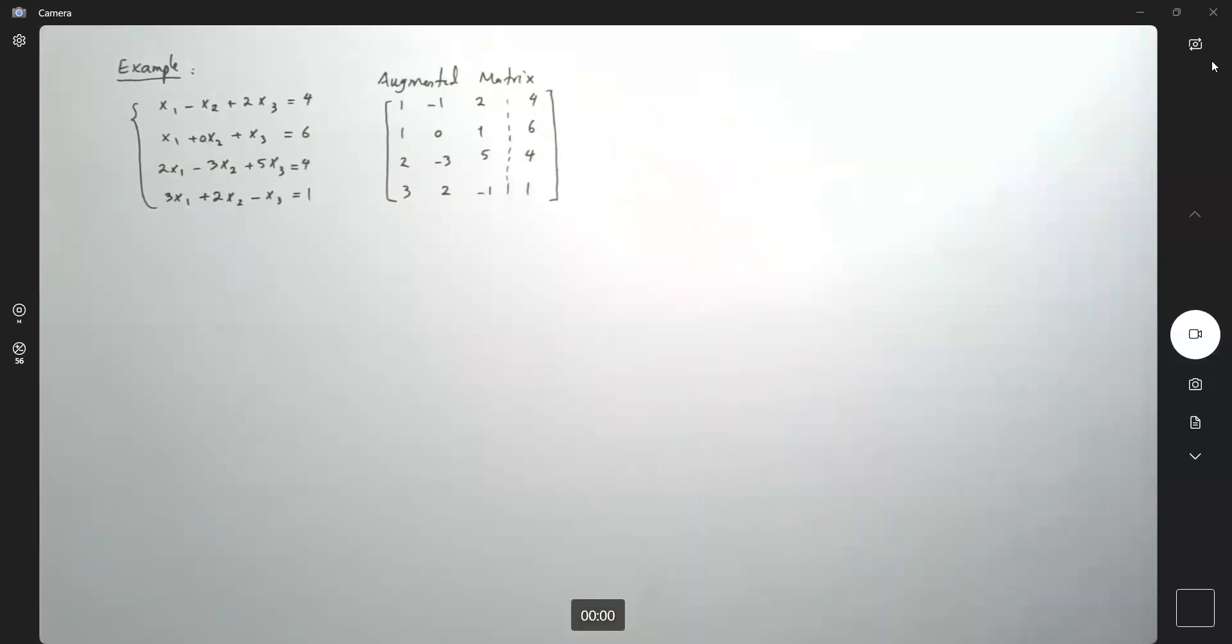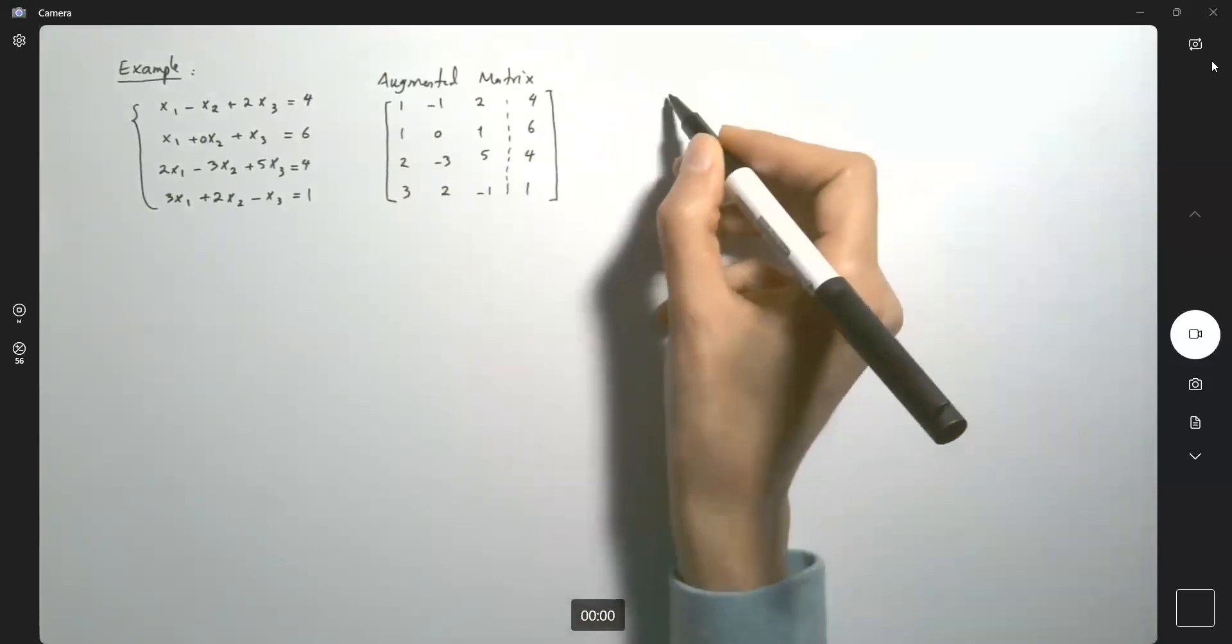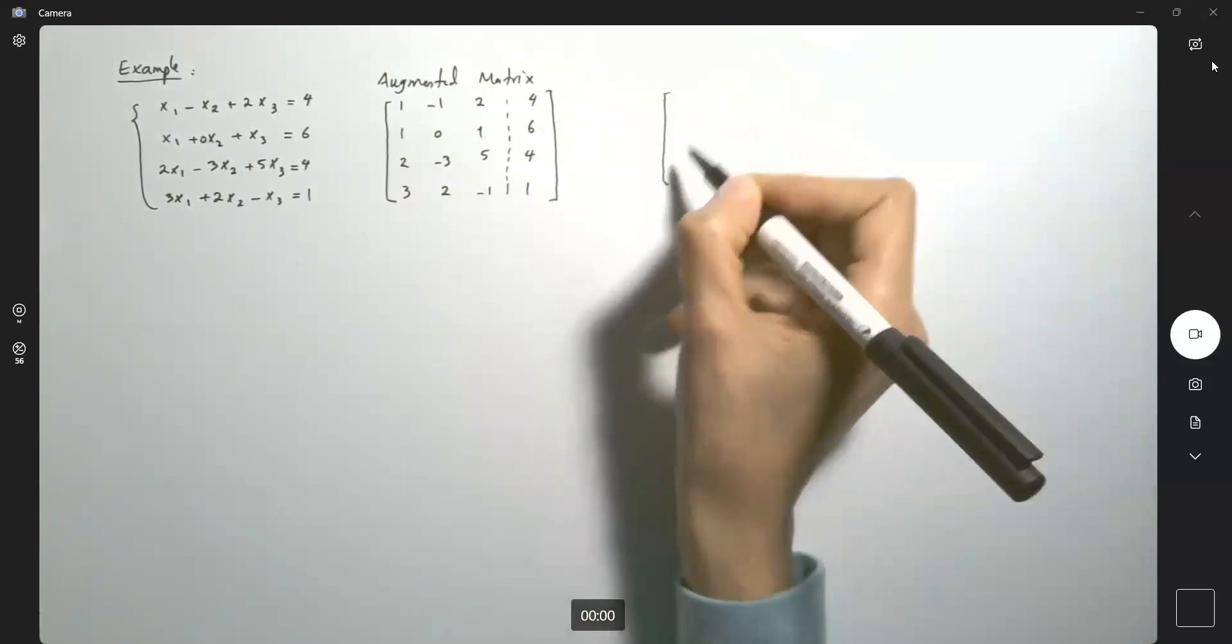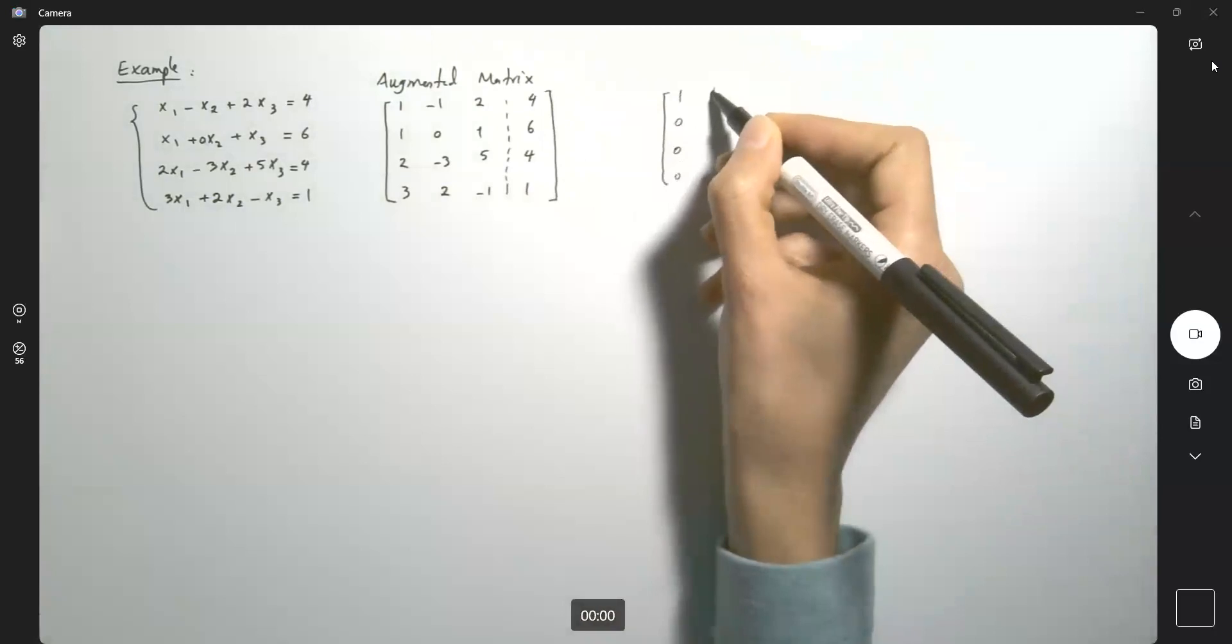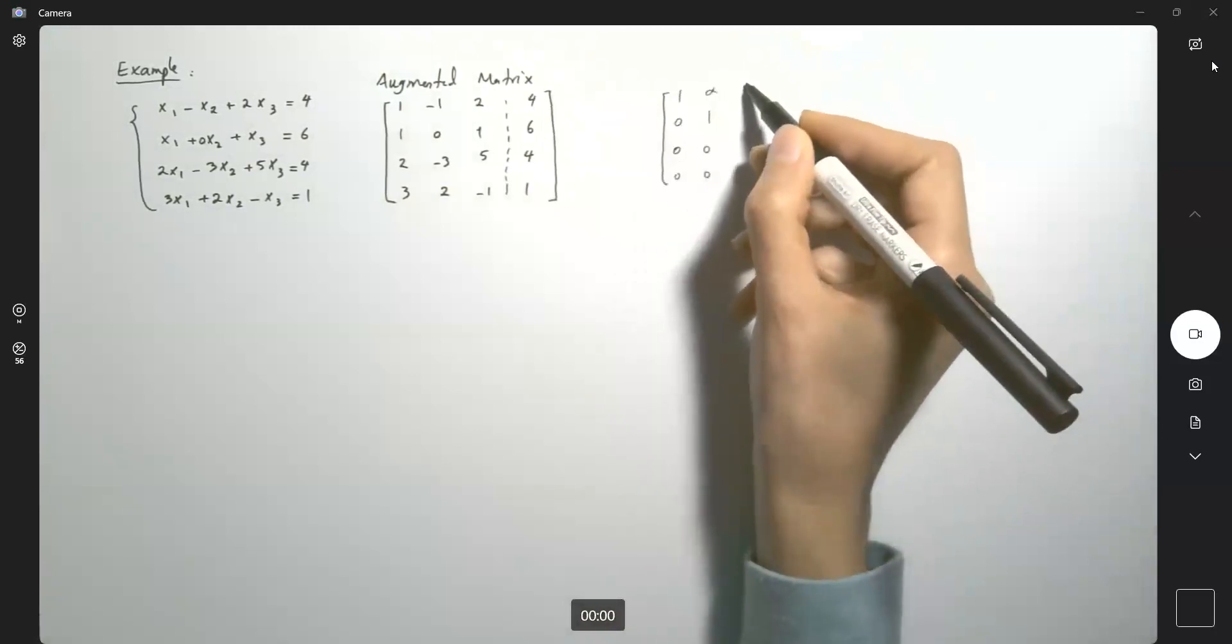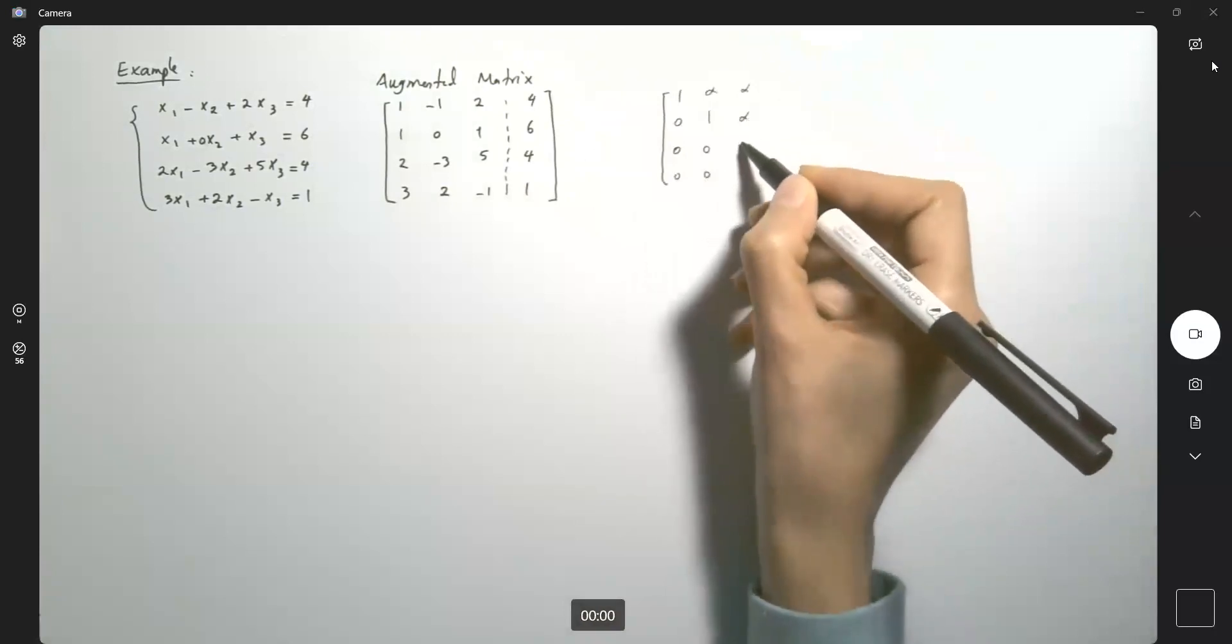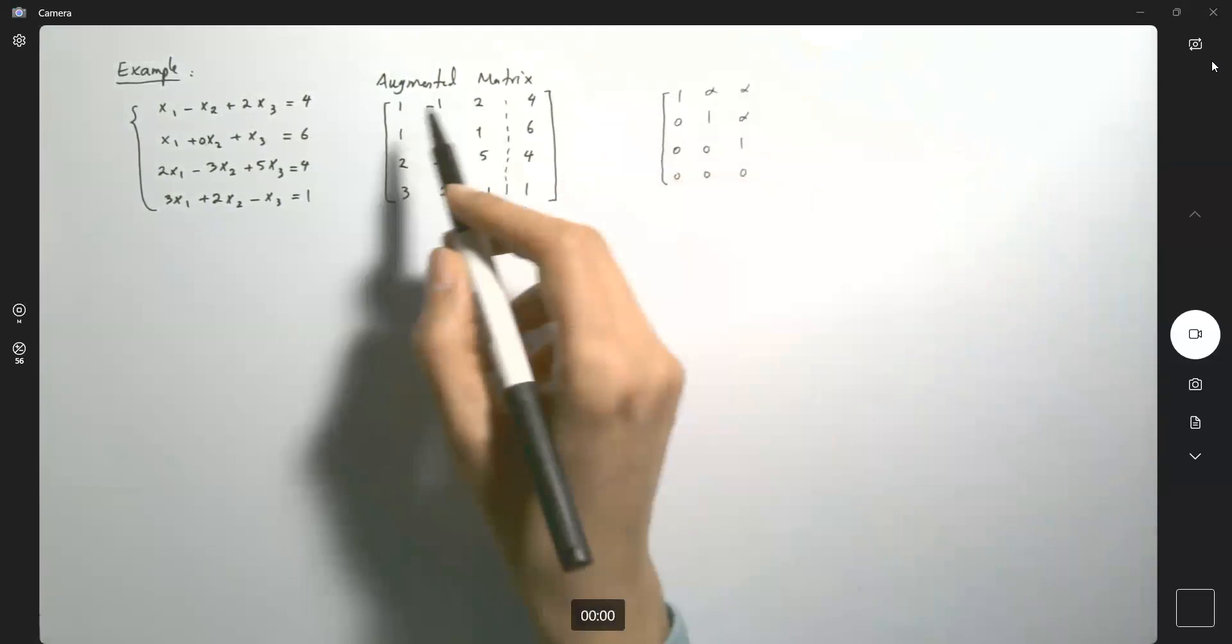Very good. So remember, what is our goal? Our goal is to convert this matrix into the form of one, zero, zero, zero. Whatever number is, then one, zero, zero. Then you have other numerical values, one, zero. So this is our goal. This is what we're trying to do.